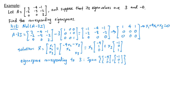The eigenspace corresponding to eigenvalue 3 is the span of the vectors negative 4, 1, 0 and negative 1, 0, 1. This gives a description of all eigenvectors corresponding to 3. For example, negative 4, 1, 0 is one eigenvector; negative 1, 0, 1 is another. We can also take linear combinations — for example, adding those two vectors gives negative 5, 1, 1, which is another eigenvector corresponding to 3.